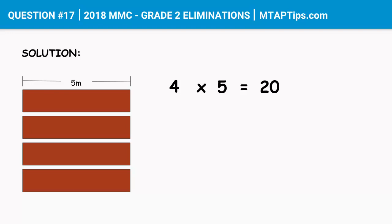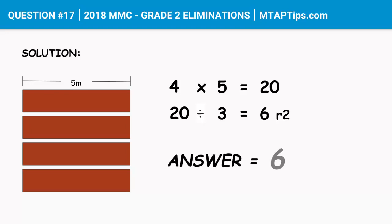To know how many bird feeders Andrew can make, we just have to divide 20 by 3. The answer is 6 remainder 2. But we don't have to worry about the remainder — all we need to know is how many bird feeders Andrew can make. So the answer is 6.